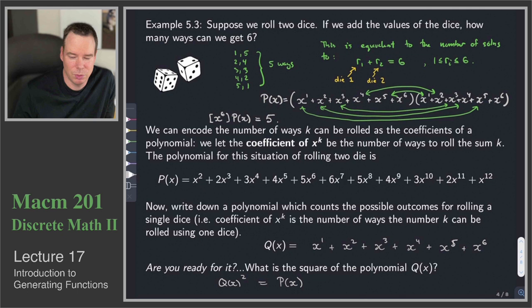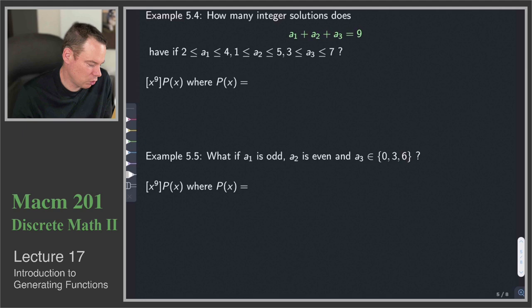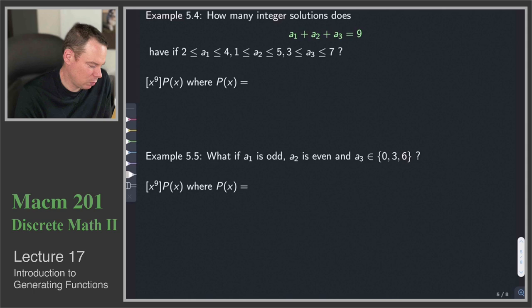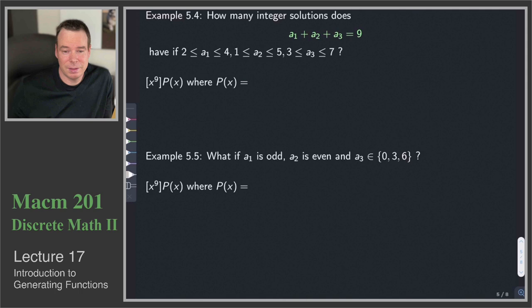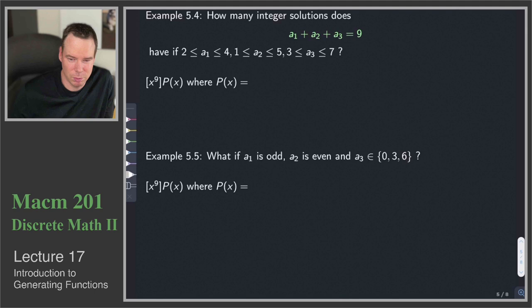Let's do more examples. How many integer solutions does a1 + a2 + a3 = 9 have, where 2 ≤ a1 ≤ 4, 1 ≤ a2 ≤ 5, and 3 ≤ a3 ≤ 7? With our previous techniques this would be challenging — having both a lower and upper bound makes it difficult. But with polynomials, it's straightforward.